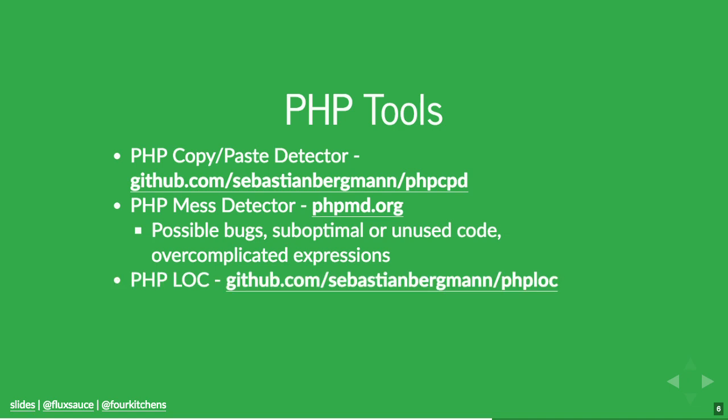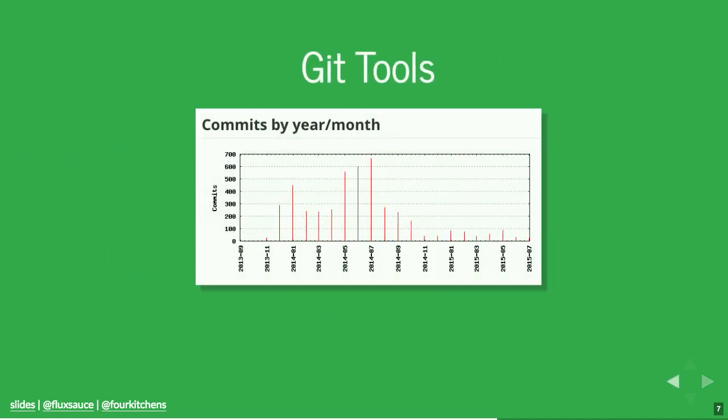PHP Lines of Code counts lines of code but also gives you a report on namespaces used, for example, and provides an overall perspective into the site — measuring the size and structure.